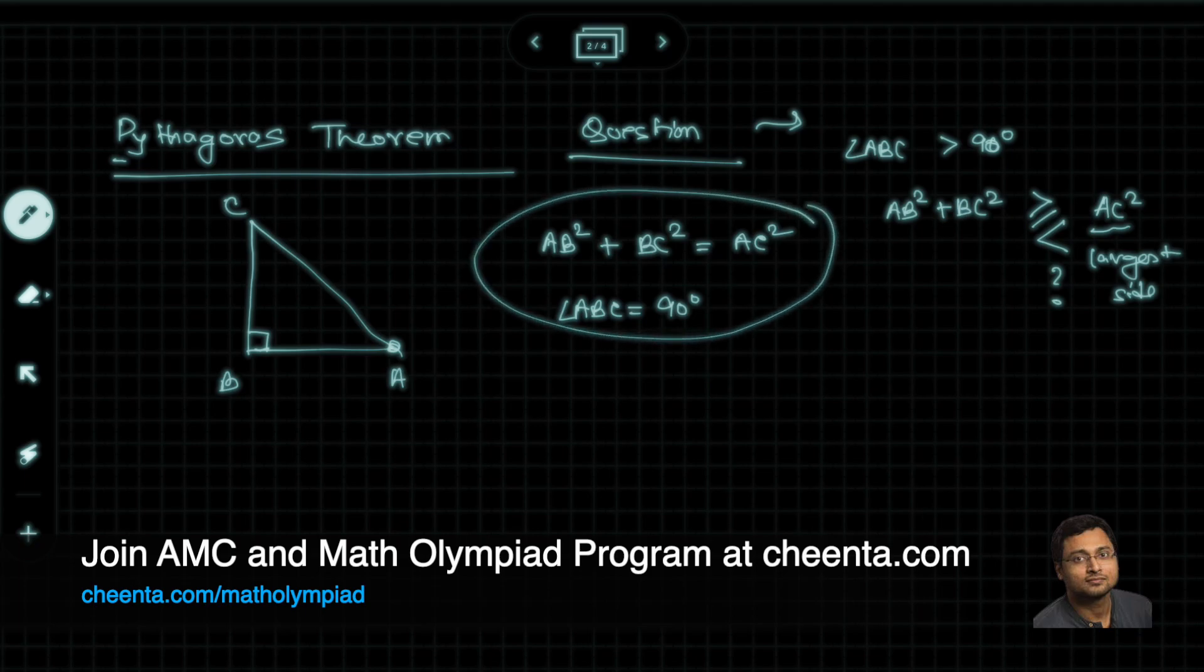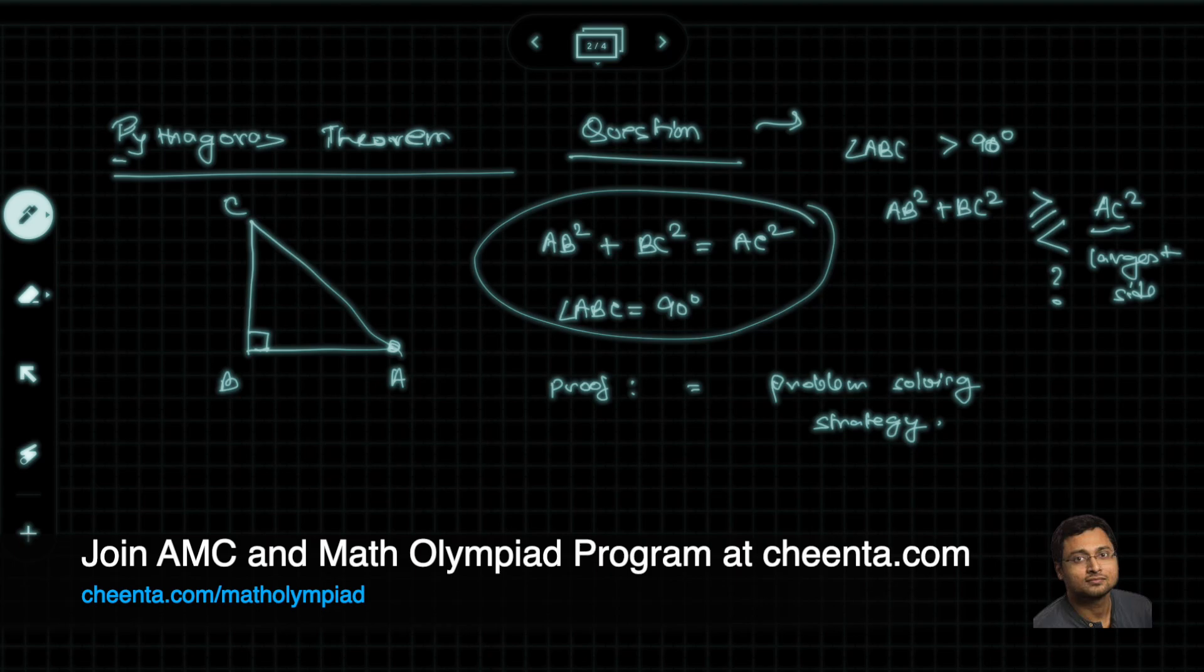AB² + BC² = AC². We know this from Pythagorean theorem and we will be applying it. It's very important that you know how to prove this because the proof is also a problem solving strategy. So it's not just a tool.